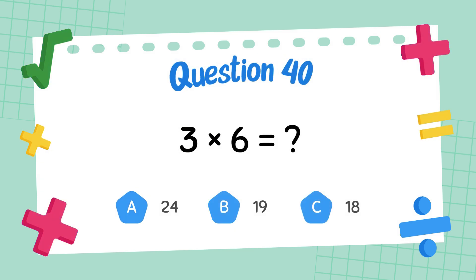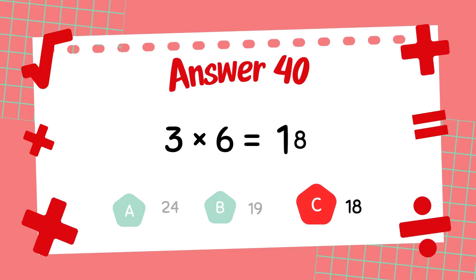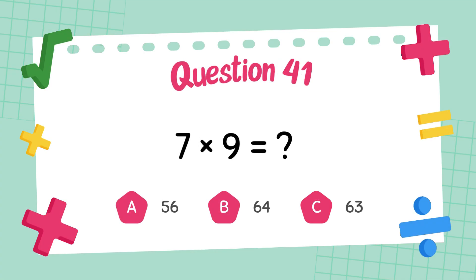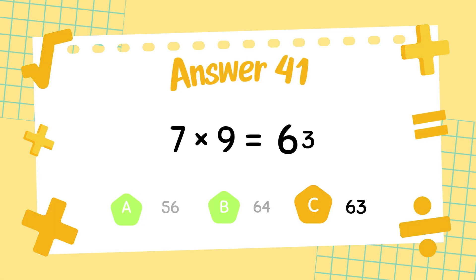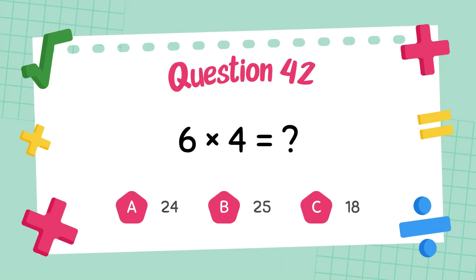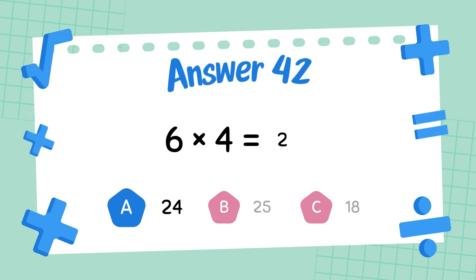What is 3 times 6? The answer is 18. What is 7 times 9? The answer is 63. What is 6 times 4? The answer is 24.